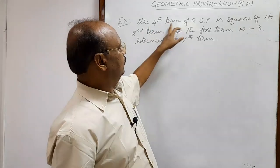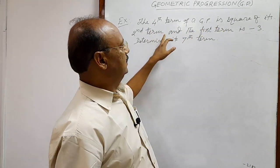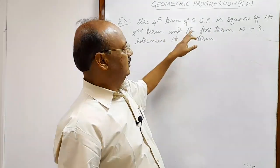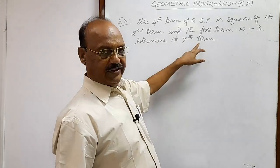The fourth term of a GP is square of its second term, and the first term is minus 3. Determine its seventh term.